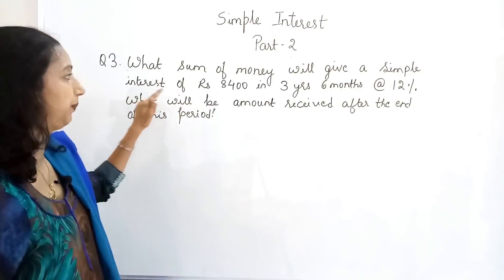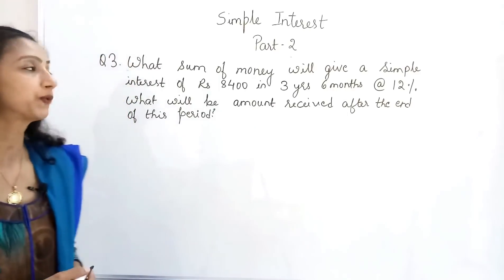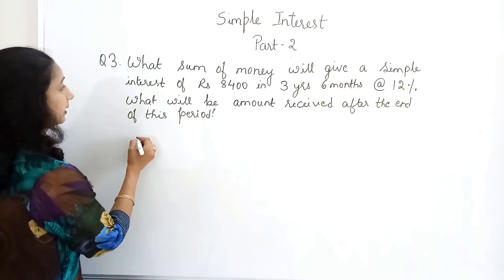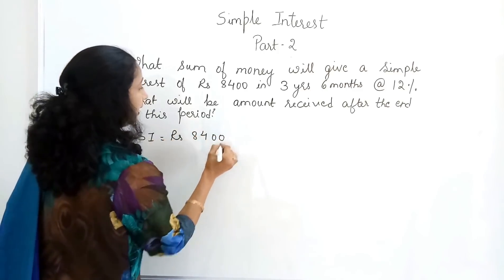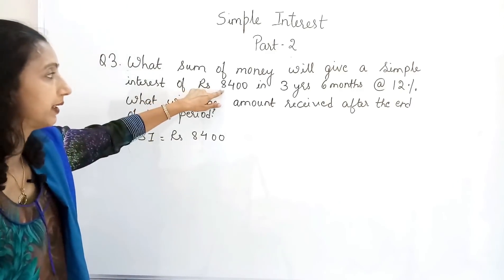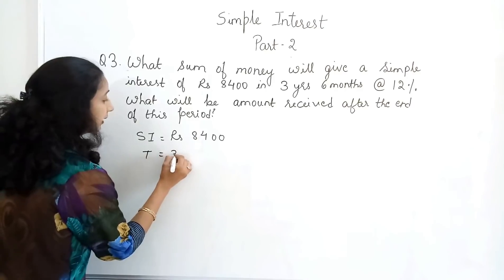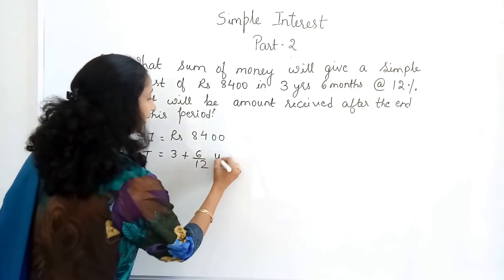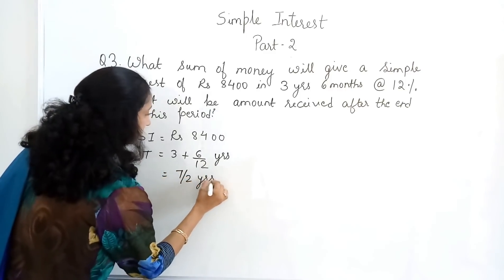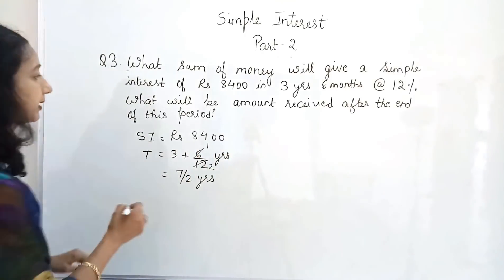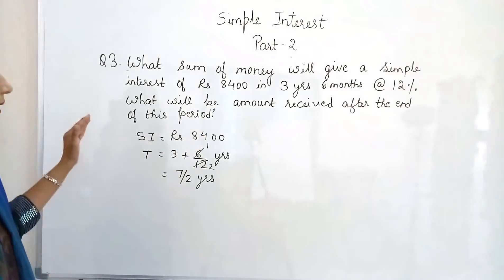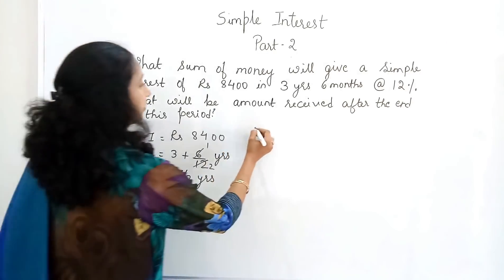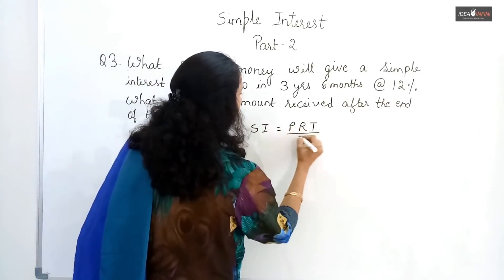Next example: what sum of money will give a simple interest of ₹8,400 in three years and six months at the rate of 12%? What will be the amount received? SI = ₹8,400; we must find the principal. The time period is 3 years + 6 months, which converts to 3 + 6/12 = 3 + 1/2 = 7/2 years. R = 12%. We need to find the principal first before calculating the amount.